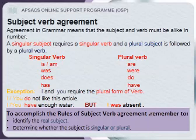A singular subject requires a singular verb, and a plural subject is followed by a plural verb. Singular verbs are: is, am, was, does, has. Plural verbs are: are, were, do, have.